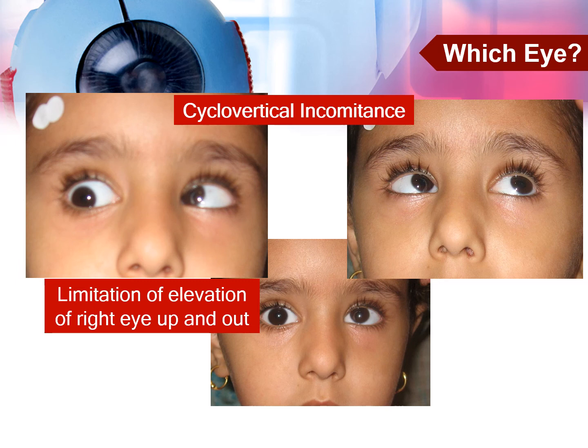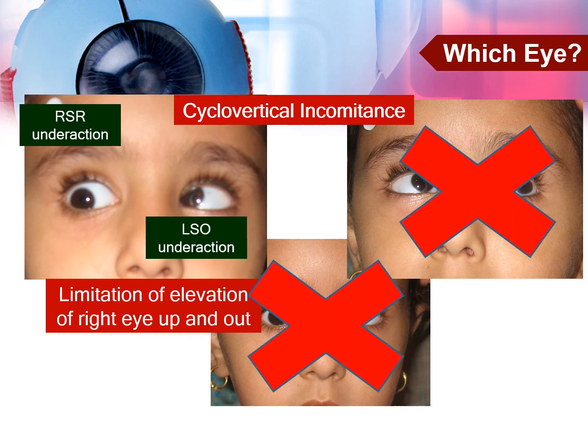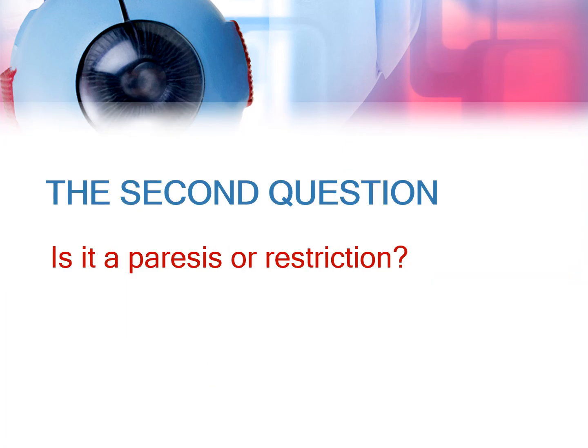This girl has left hypertropia that increases on right gaze. In such cases, it is hard to tell whether the left hypertropia is caused by a left superior oblique under action with a secondary left inferior oblique over action, or a right superior rectus under action with a secondary right inferior rectus tightness. The second question we need to answer is whether the under action is caused by paresis or restriction.